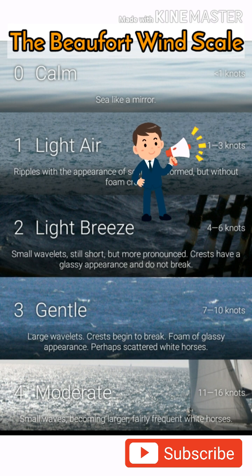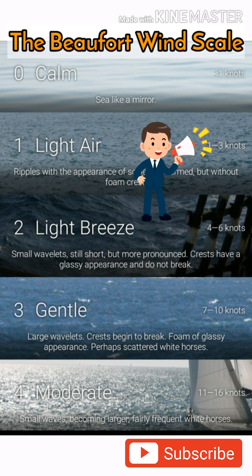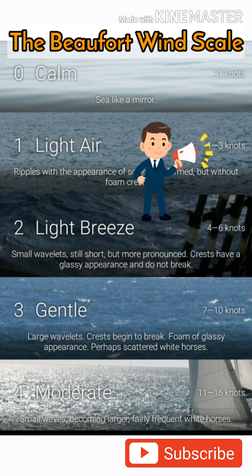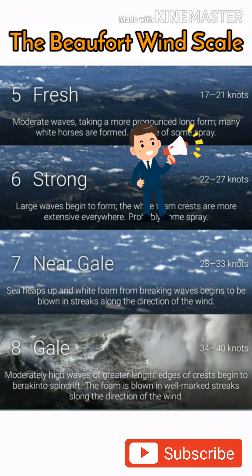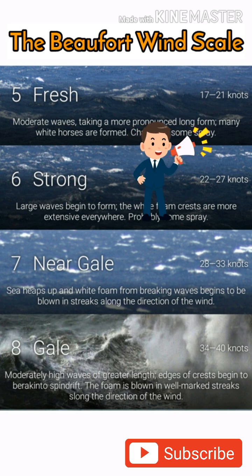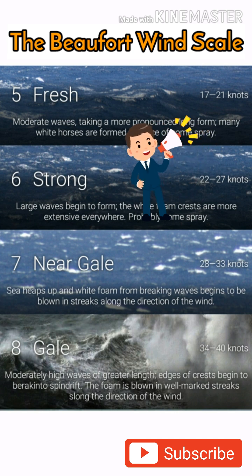Force 2 — Light Breeze. Wind speed 4 to 6 knots. Small wavelets on sea. Force 3 — Gentle Breeze. Wind speed 7 to 10 knots. Large wavelets on sea. Force 4 — Moderate Breeze. Wind speed 11 to 16 knots. Small waves, fairly frequent white horses. Force 5 — Fresh Breeze. Large waves, extensive foam crests.